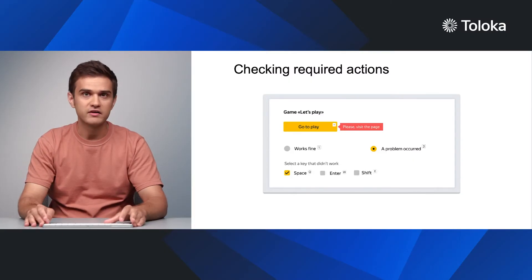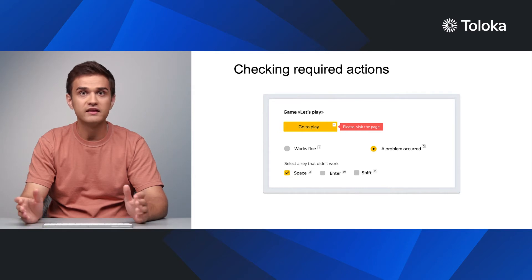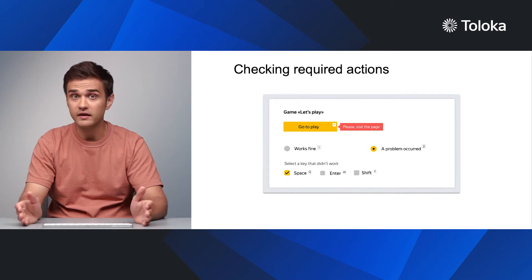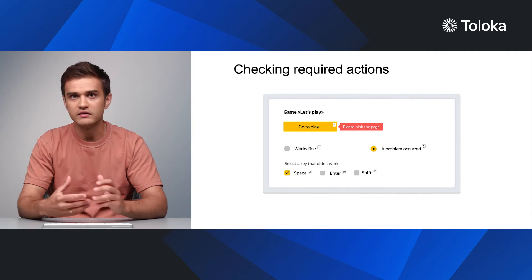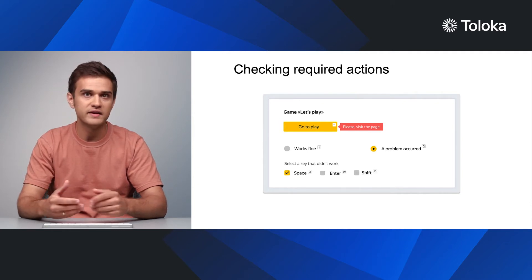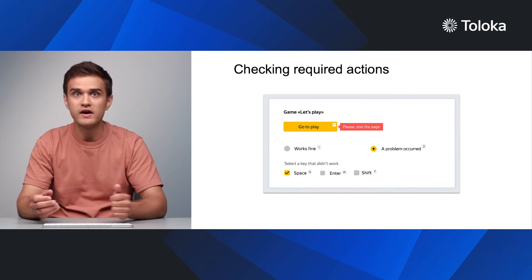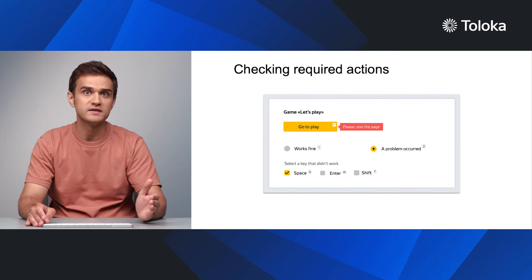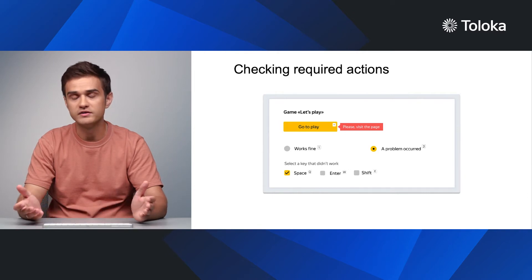The next rule is to check required actions. Performers usually work fast and can accidentally skip important steps. You can track and check a performer's actions in the interface. It can be a simple check, like checking that a performer selected an answer, or it can be more complex, like checking that a performer played media content, opened a link, or typed the correct text into an answer field. You can use this tracking to measure the quality of a performer's work — the latter will be discussed more in the quality control videos.